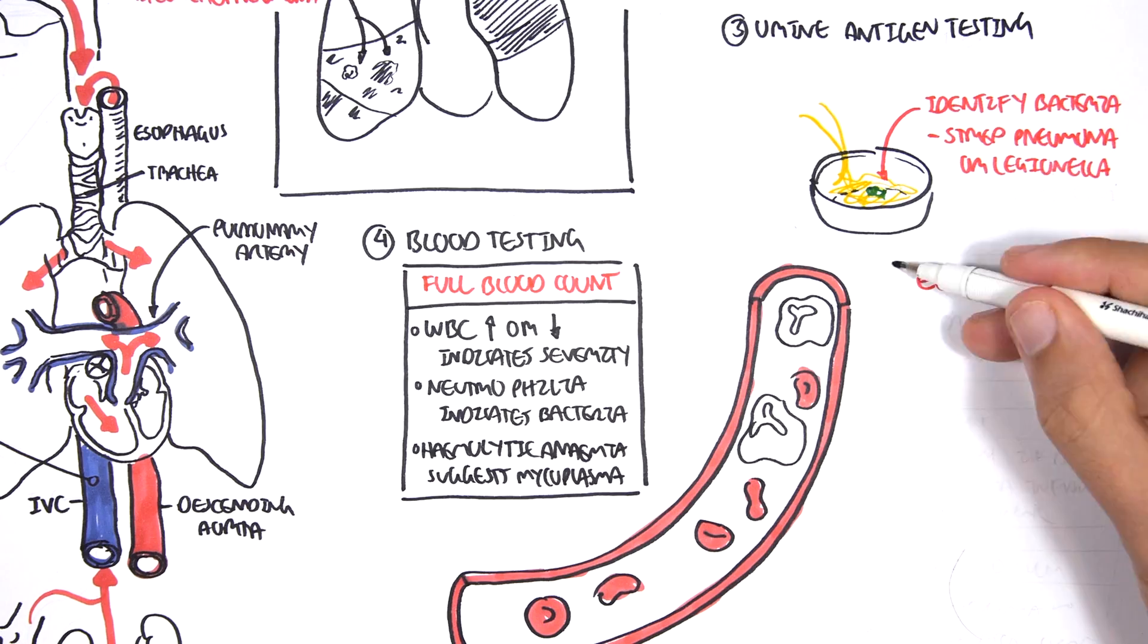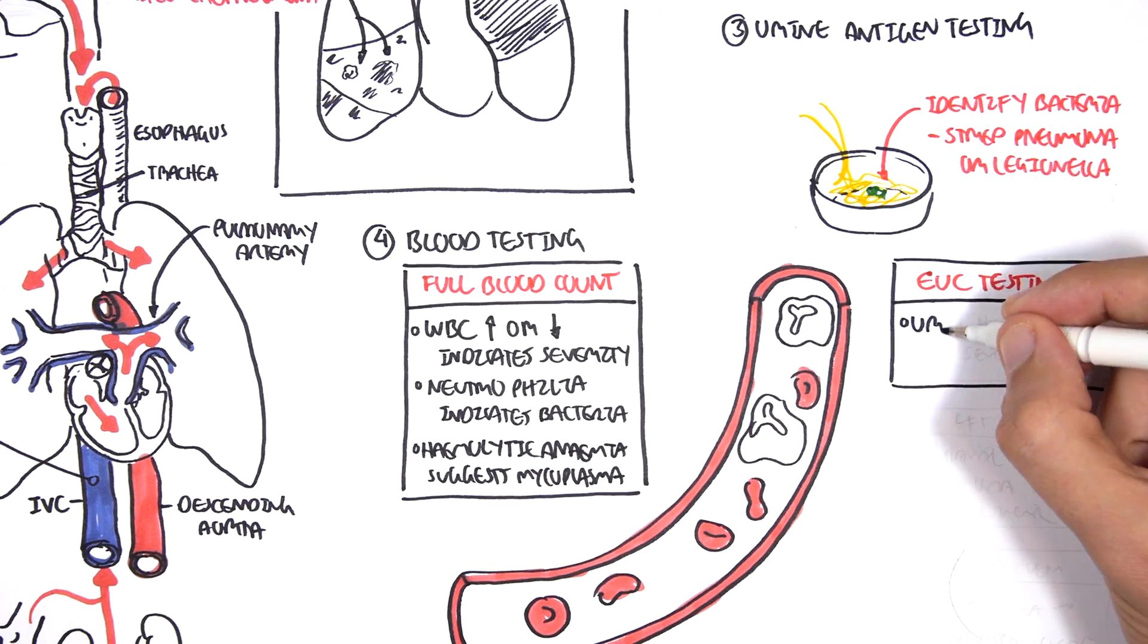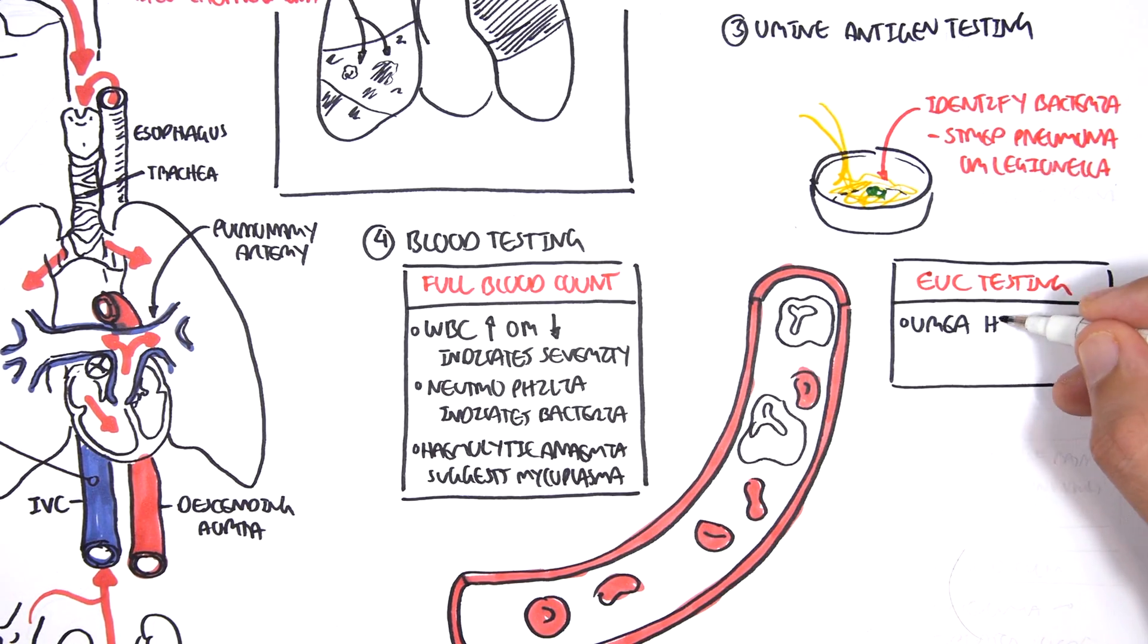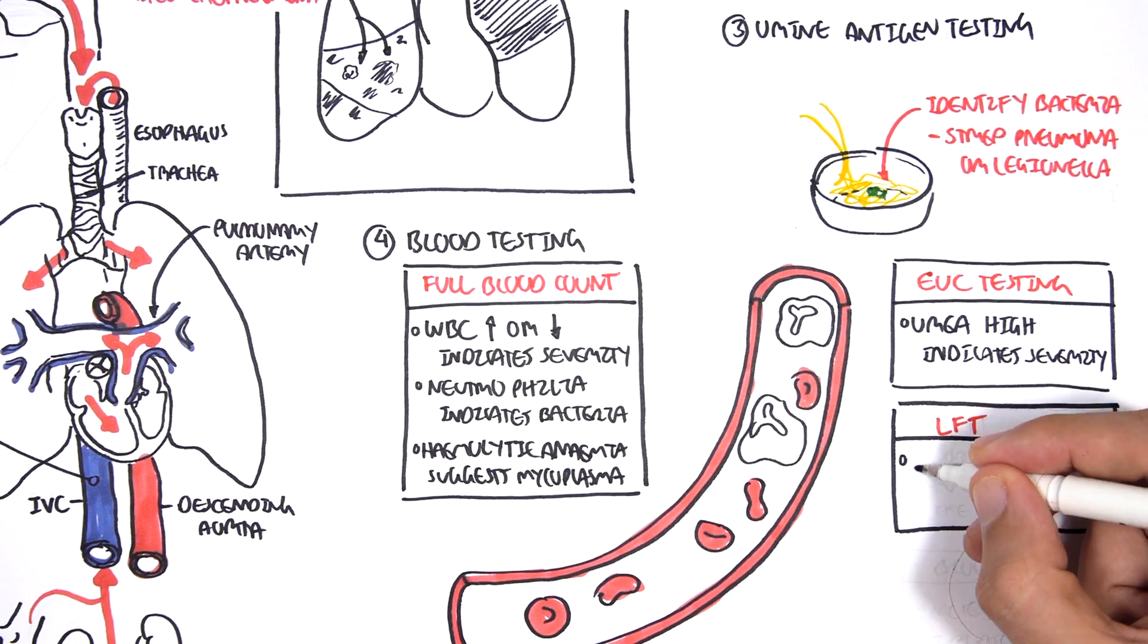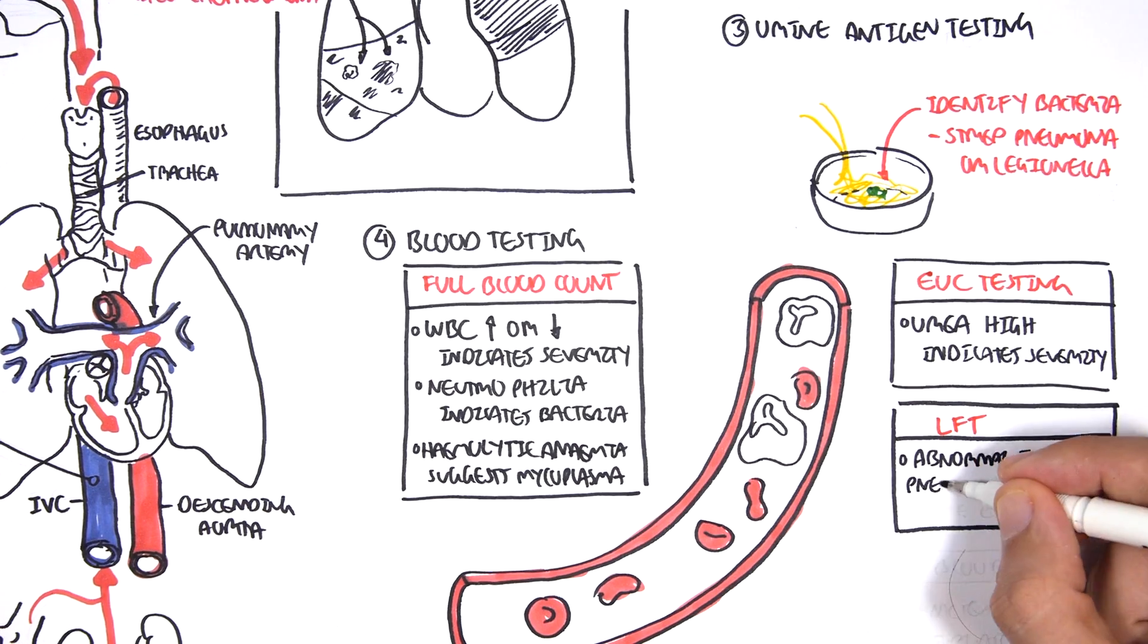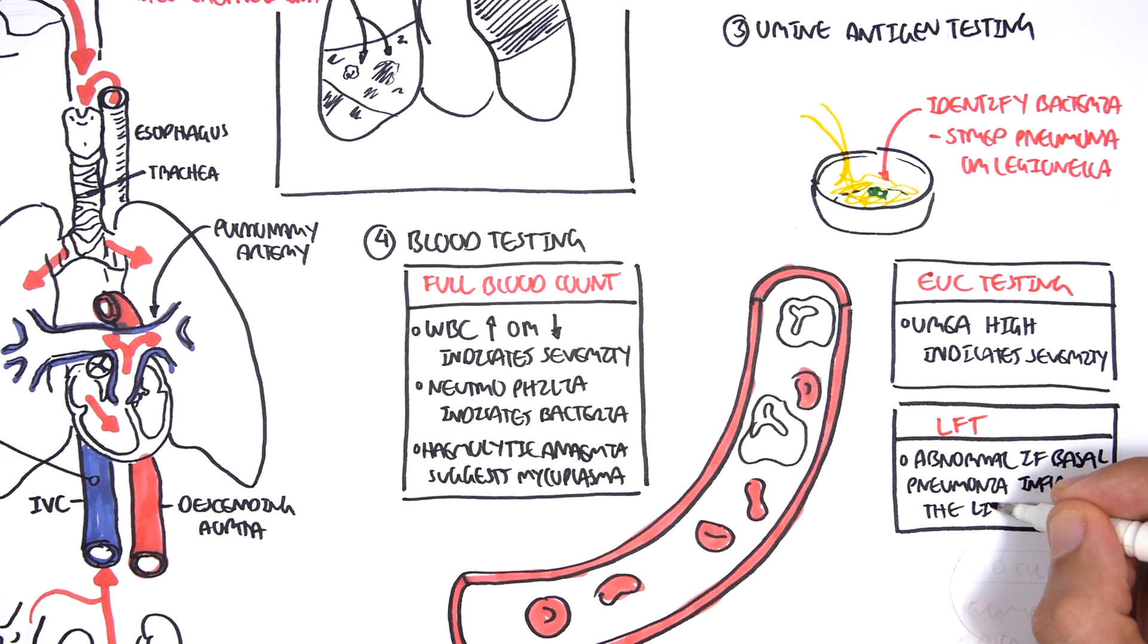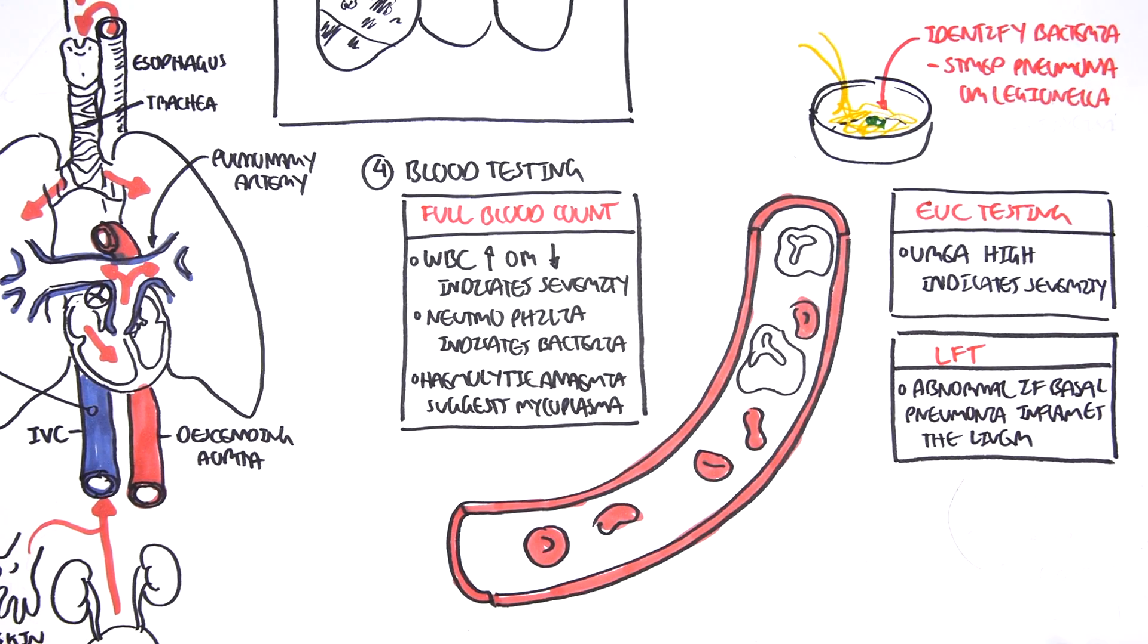E. Electrolyte urea creatinine testing. A urea high indicates the severity. Liver function tests you can also perform, and it's abnormal if the base of the pneumonia inflames essentially the liver.